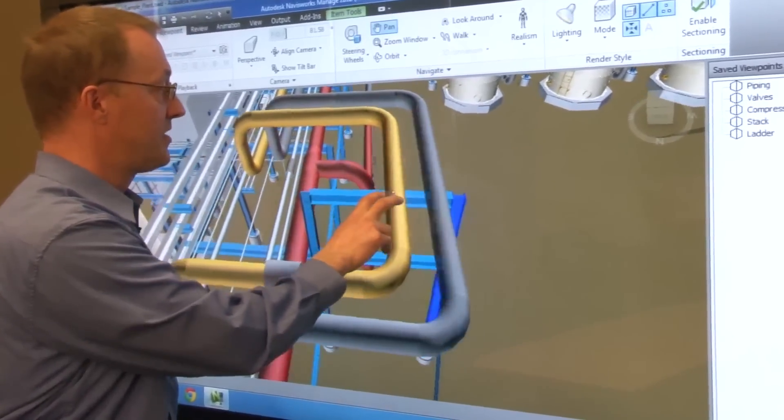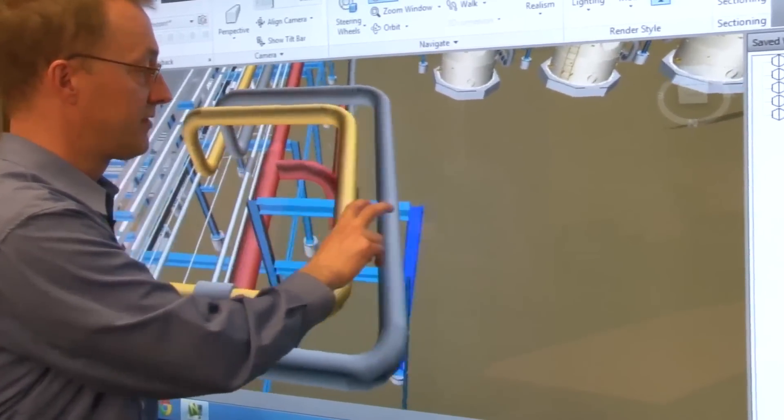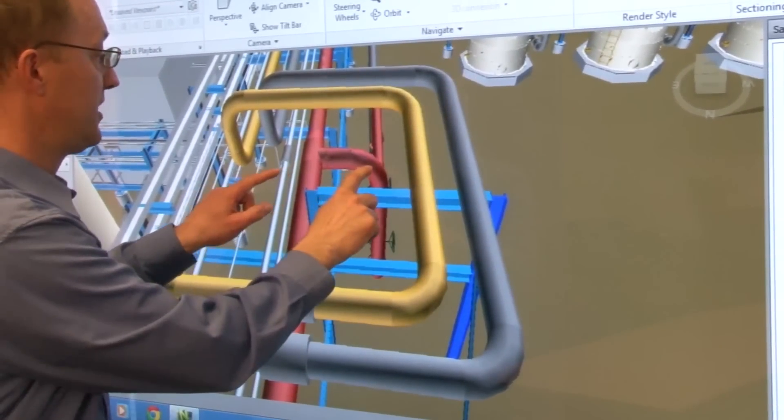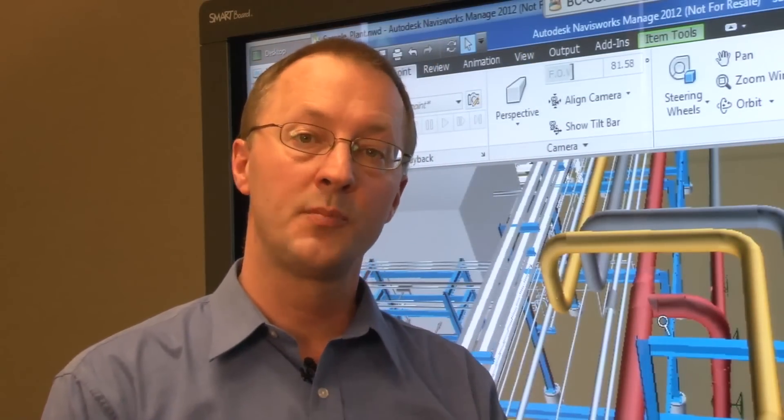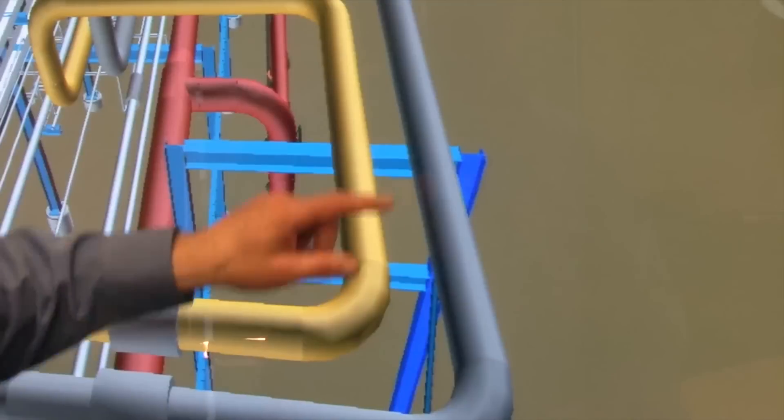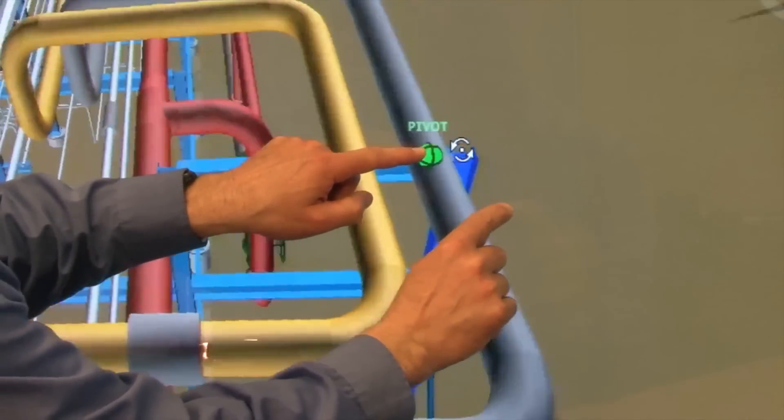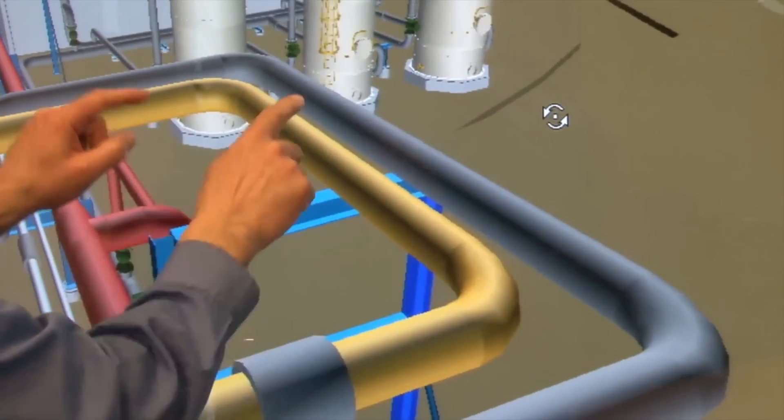I can pan up and down and left and right with the model and I can also zoom in and out. You can also use a gesture to orbit the model around a pivot point. Your stationary finger sets the pivot point while your second finger guides the orbit.